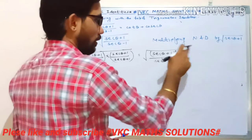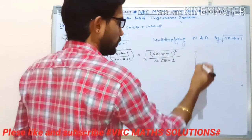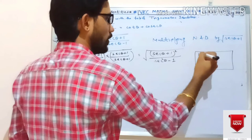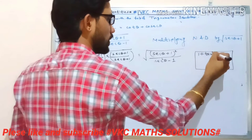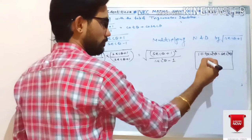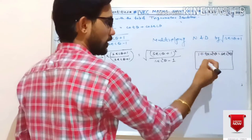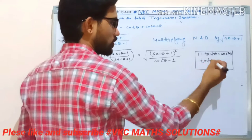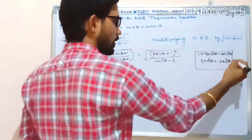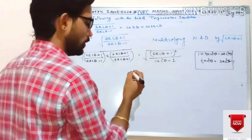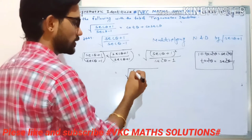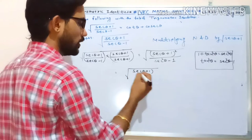Now for the denominator, we apply the identity: 1 + tan²θ = sec²θ. So sec²θ − 1 = tan²θ. Applying this identity, inside the square root the numerator is (secθ + 1)² and the denominator becomes tan²θ.